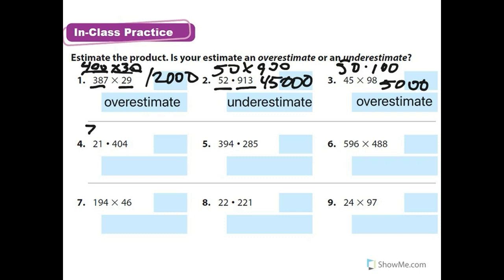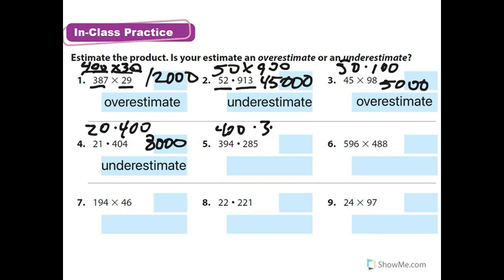So I'm doing 20 times 400. 2 times 4 is 8 with 1, 2, 3 zeros: 8,000. And this is an underestimate. Then I'm going to do 400 times 300. It's going to be 12 with 1, 2, 3, 4 zeros: 120,000. And it is an overestimate.